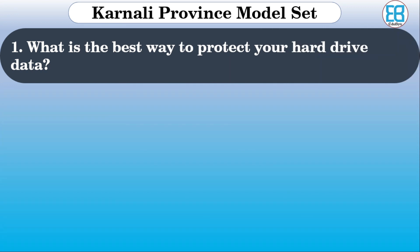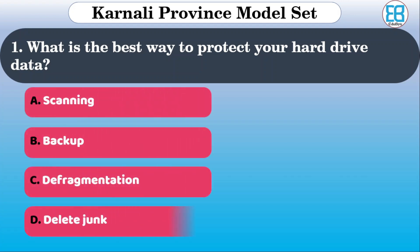What is the best way to protect your hard drive? The options are: corruption scanning, backup, defragmentation, delete. The correct option is backup — data protection for hard drive. Backup is the best option.